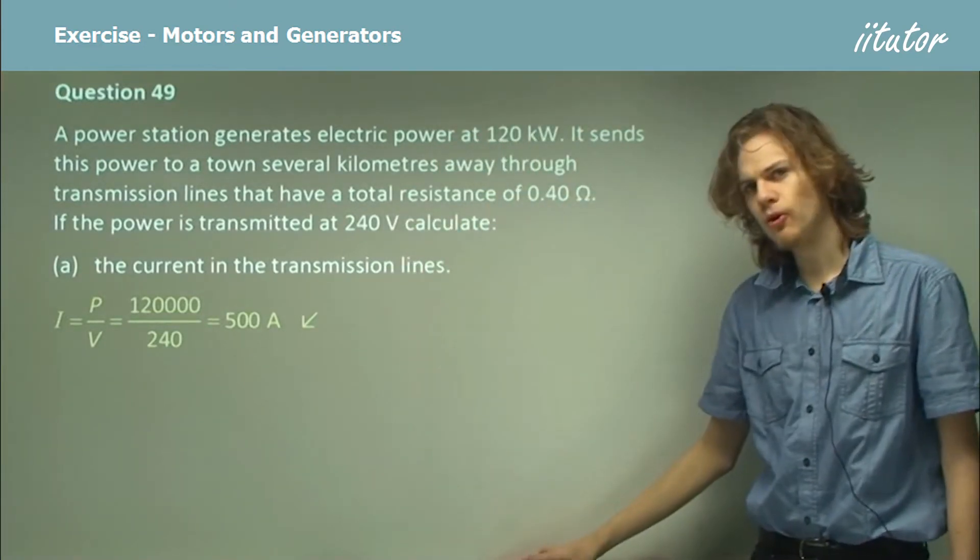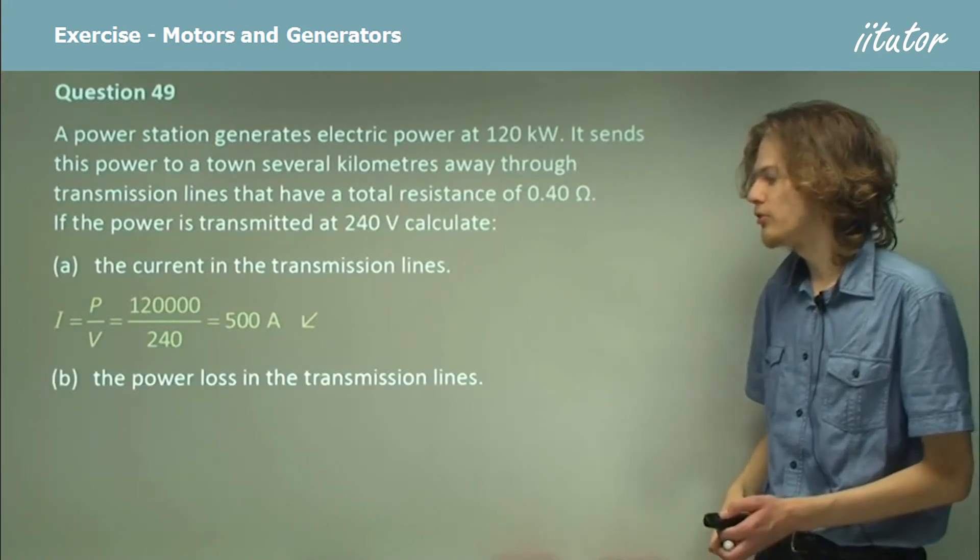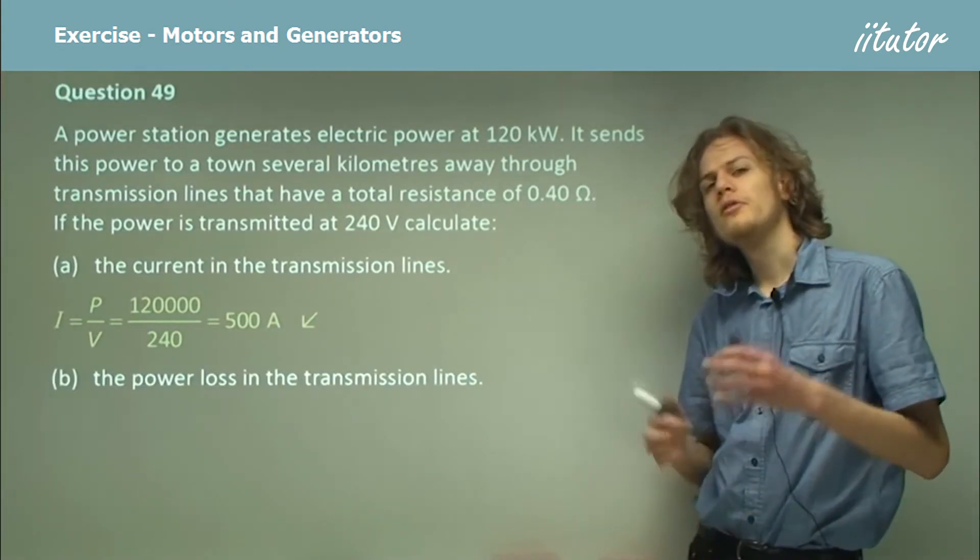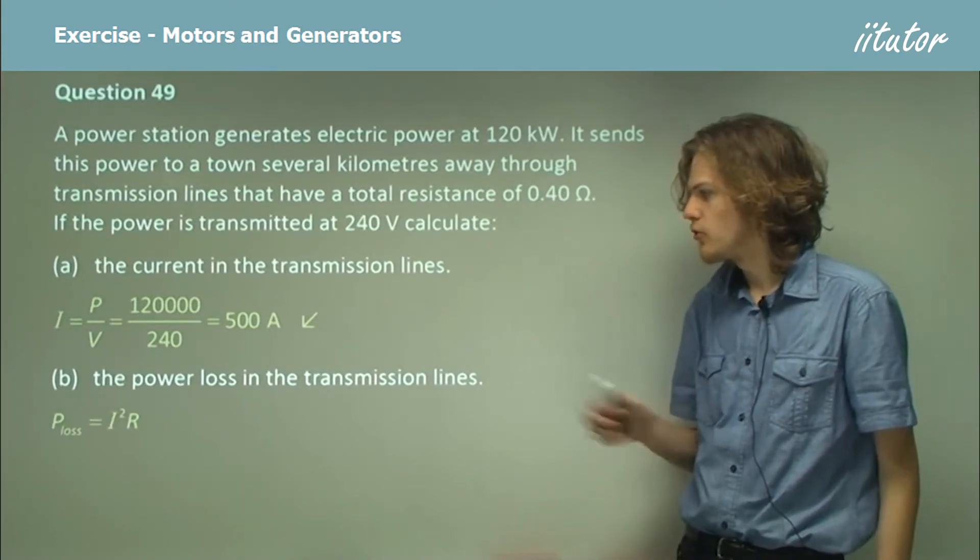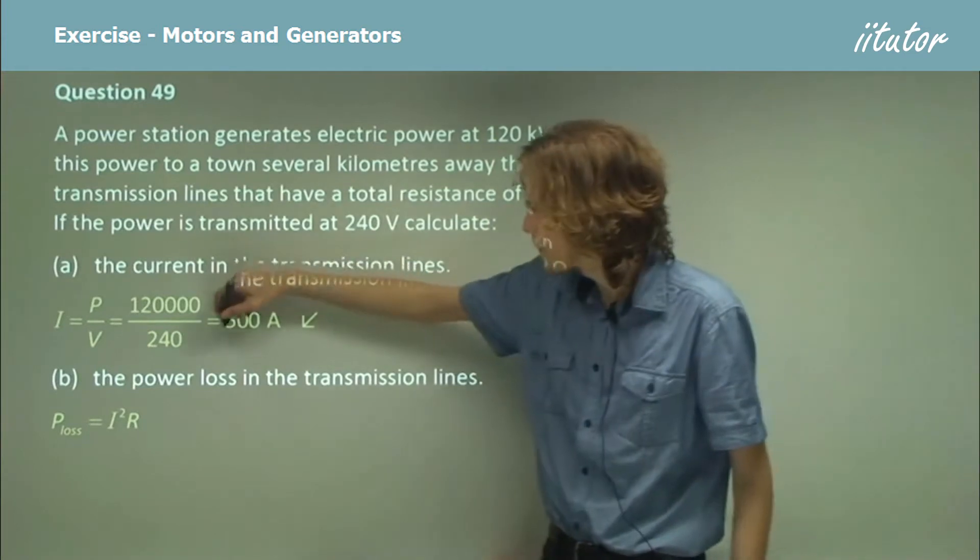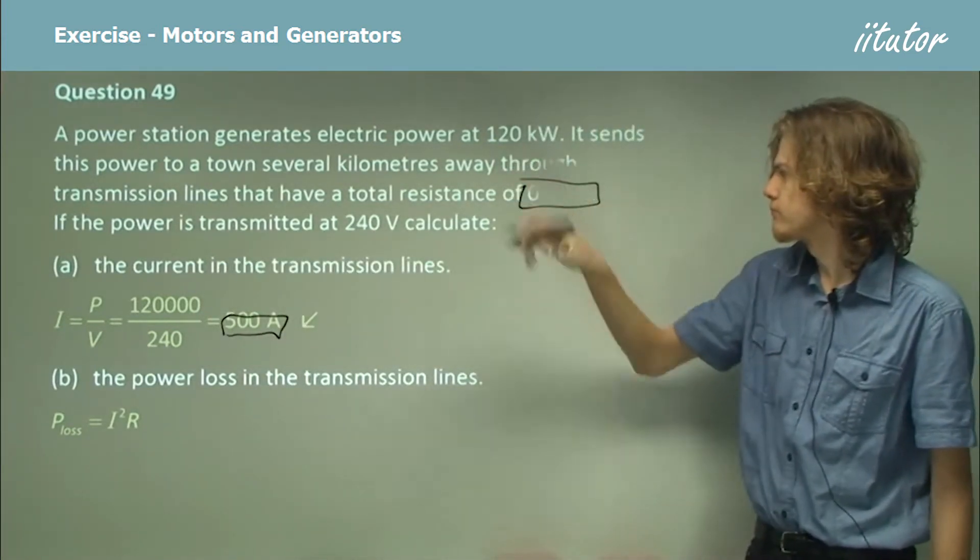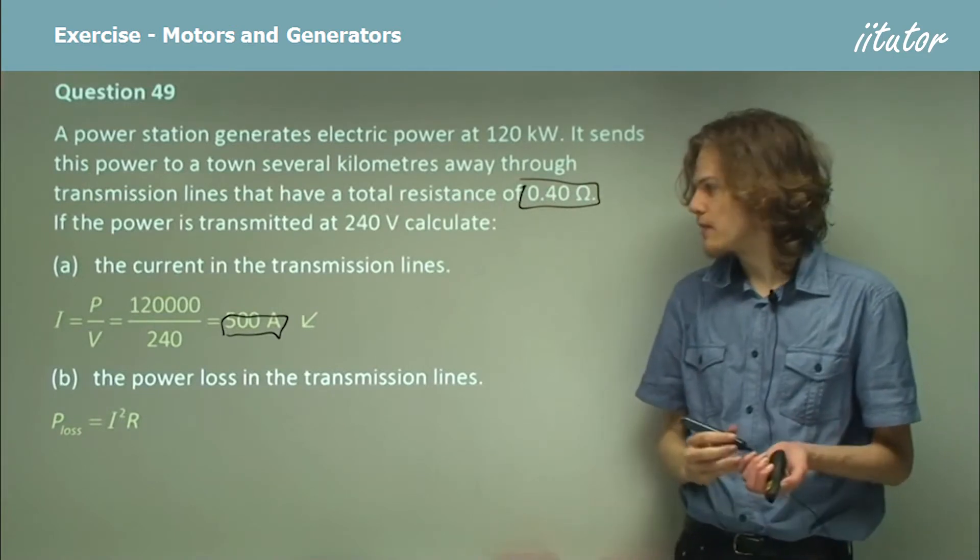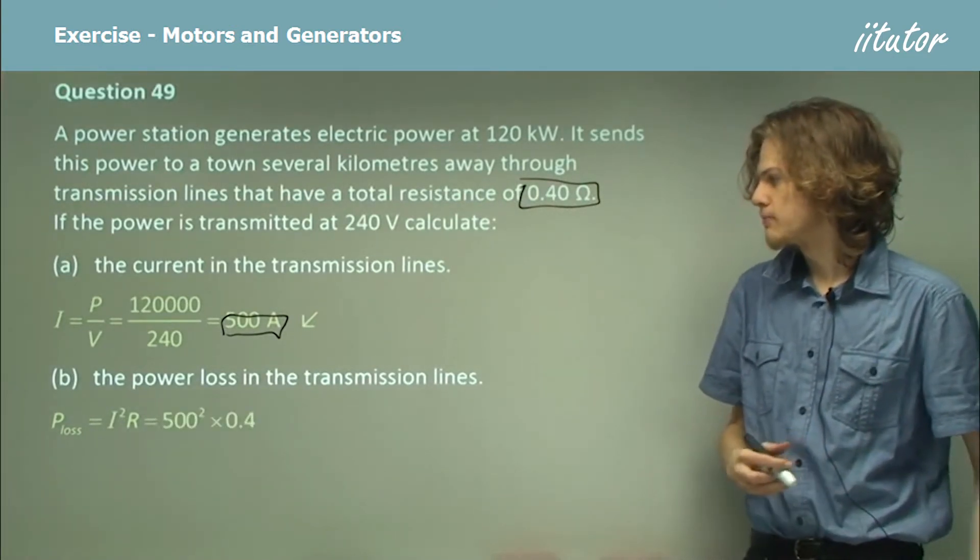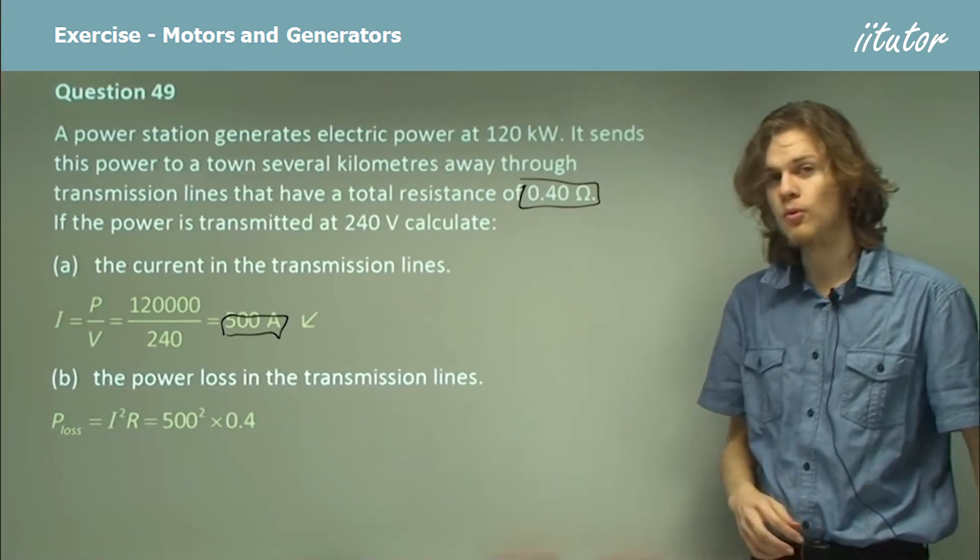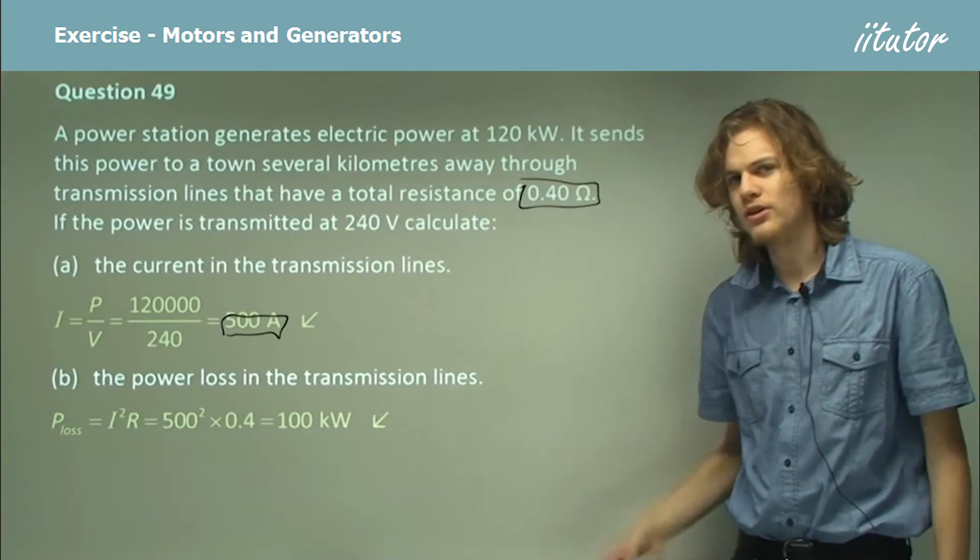So what are we using that resistance for? Part B. Find the power loss in the transmission lines. Now remember, this is always given by I squared R. So the power loss equals I squared, and here's I, times R, which is over here. So we take 500 and we square it, and we multiply it by the resistance. We'll end up with 500 squared times 0.4, which evaluates to 100 kilowatts, which is a large number.